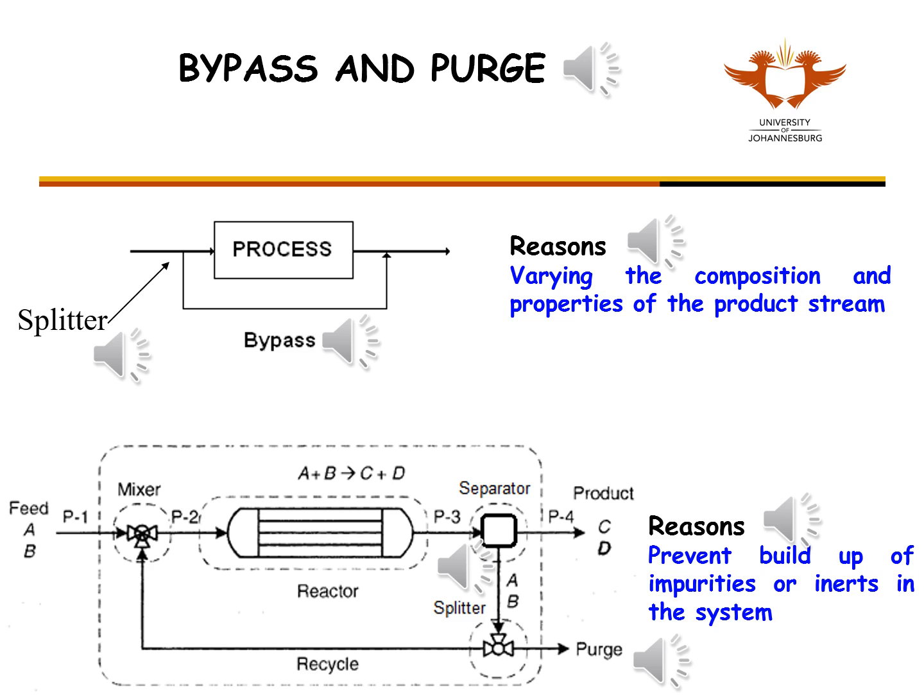Imagine what would happen if there were no purge and they were allowed to build up in the plant. Note that as the recycle stream is split, the composition of the purge is the same as the composition of the recycle. Also note that the purge flow rate would be much less than that of the recycle stream to limit loss of reactants A and B.